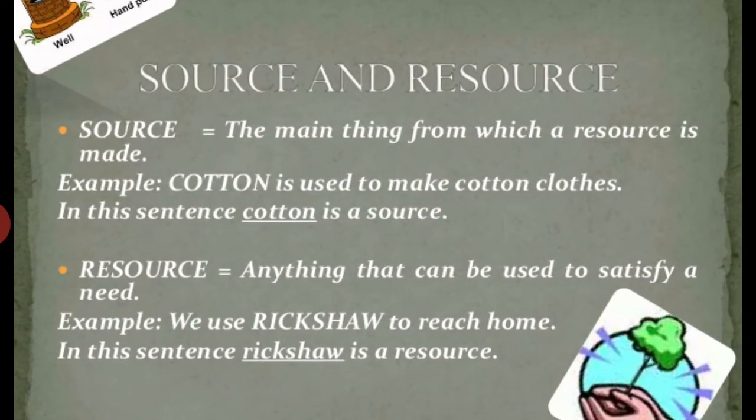Source and resource are two different things. A source is the main thing from which a resource is made. For example, cotton is used to make cotton cloth. In this sentence, cotton is a source and cotton cloth is a resource.